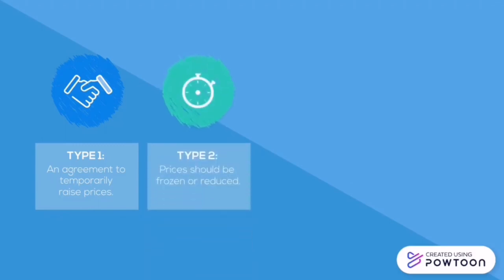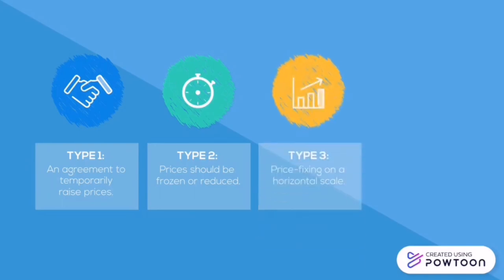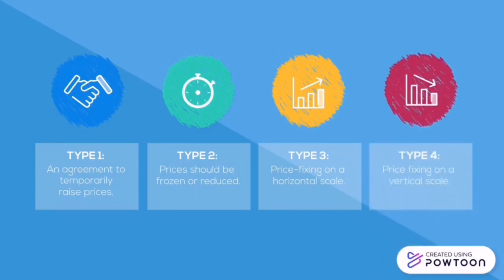Second, prices can be frozen or reduced — price freezes should be employed only when monetary policy has proven ineffective. Central banks utilize economic policy to avoid inflation, reduce unemployment, and keep long-term interest rates stable. Third, horizontal price fixing entails rivals reaching an agreement on a minimum or maximum price for their goods or services. Finally, vertical price fixing involves supply chain members — manufacturers, producers, and retailers — agreeing on a minimum and maximum price, such as setting a minimum resale price together.